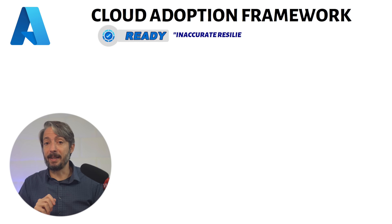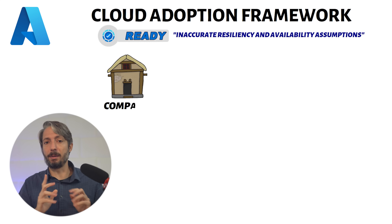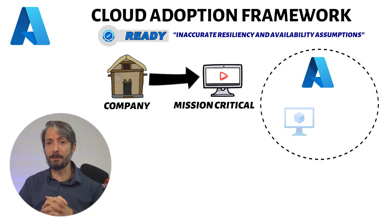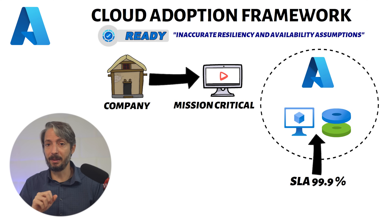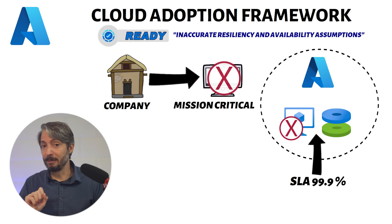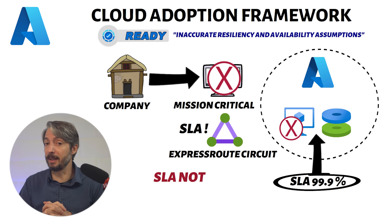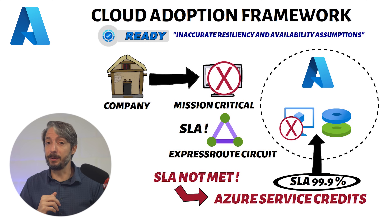Inaccurate resilience and availability assumptions is the next anti-pattern. This is highlighted by an example of a startup company which implements a mission-critical application on IaaS. Developers at the startup look at the virtual machine uptime SLA of 99.9% and, wanting to cut costs, use a single VM with premium storage. When the VM fails, the application can't recover. They fail to realize that while the VM has a 99.9% SLA, there are many other components in between, such as connectivity. Also, if Microsoft doesn't meet the SLA, they only give you a percentage of service credit back on your next Azure bill — so you have to ask yourself, is that really enough?